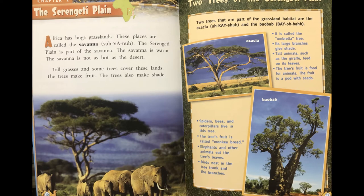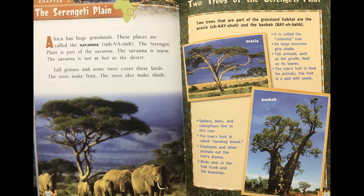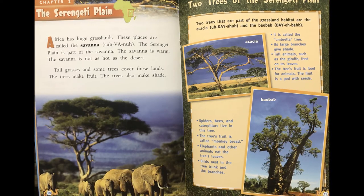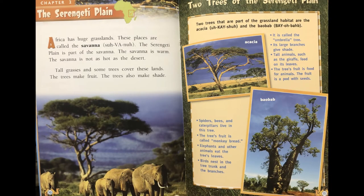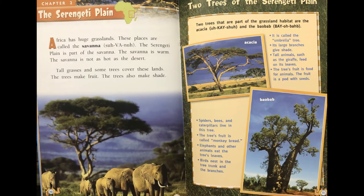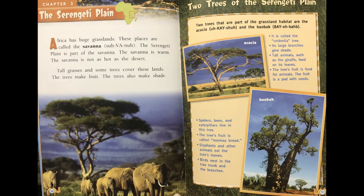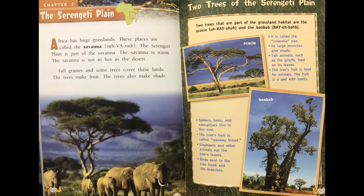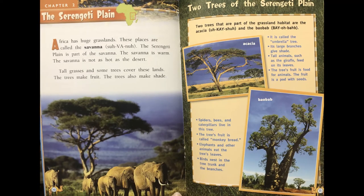Two trees that are part of the grassland habitat are the acacia and the baobab. The acacia is called the umbrella tree — its large branches give shade, tall animals like the giraffe feed on its leaves, and its fruit is a pod with seeds. In the baobab, spiders, bees, and caterpillars live in the tree; its fruit is called monkey bread; elephants and other animals eat its leaves; and birds nest in the trunk and branches.